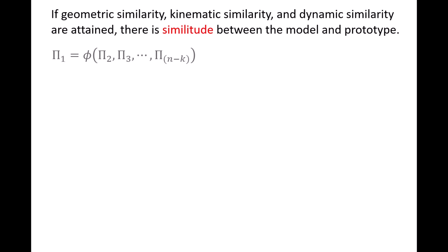If geometric similarity, kinematic similarity, and dynamic similarity between the model and prototype are attained, we say there is similitude between the model and prototype. If similitude exists, the modeling results should accurately predict what will happen to the prototype. As discussed in previous videos, when conducting modeling studies, we start by developing a set of n minus k pi groups, where n is the number of variables relevant to the problem and k is the number of reference dimensions. The similarity requirements specify how to run the modeling study so that the results from the model can be used to predict the behavior of the prototype.